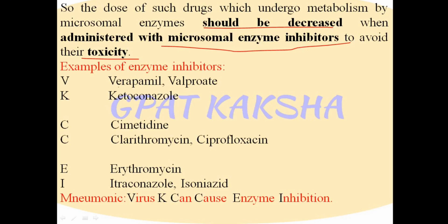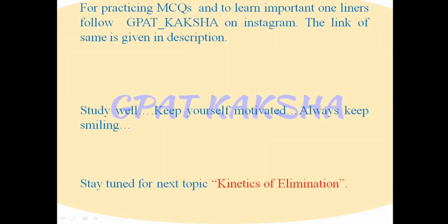Examples of enzyme inhibitors are verapamil, valproate, ketoconazole, cimetidine, clarithromycin, ciprofloxacin, erythromycin, itraconazole, and isoniazid. You can remember these using the mnemonic: 'Virus K Can Cause Enzyme Inhibition.' By this mnemonic, you can remember the examples of enzyme inhibitors — drugs that inhibit microsomal enzymes.